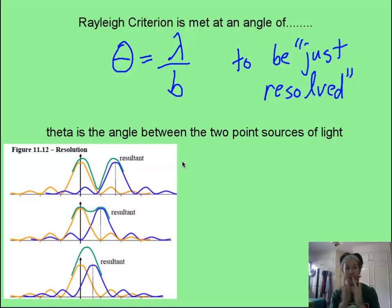If that angle gets bigger, and the two point sources are getting farther apart, that's good. That's easier to resolve. So we can say here that if theta becomes greater than wavelength over slit, then you get this, and they are resolved.